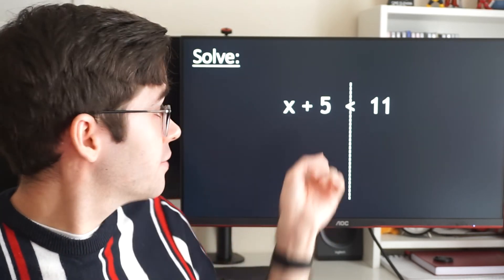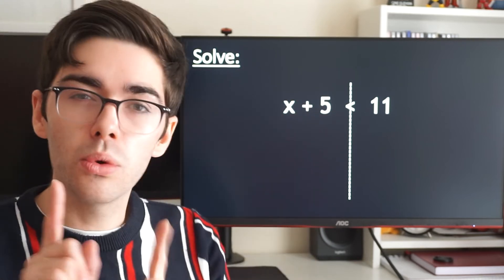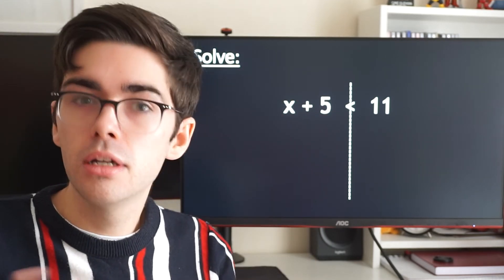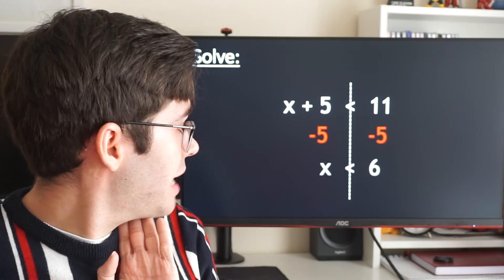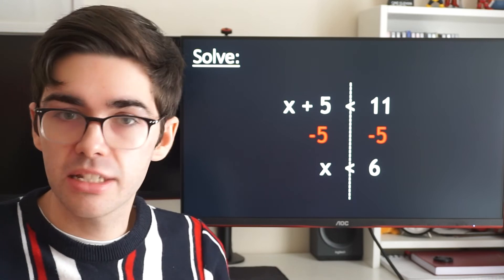So what have I got to get rid of? Well, if I want to get x by itself, I've got to get rid of this plus five. What's the opposite of adding five? Take away five from both sides. Take away five from both sides. We're left with x is less than six. That's our answer.